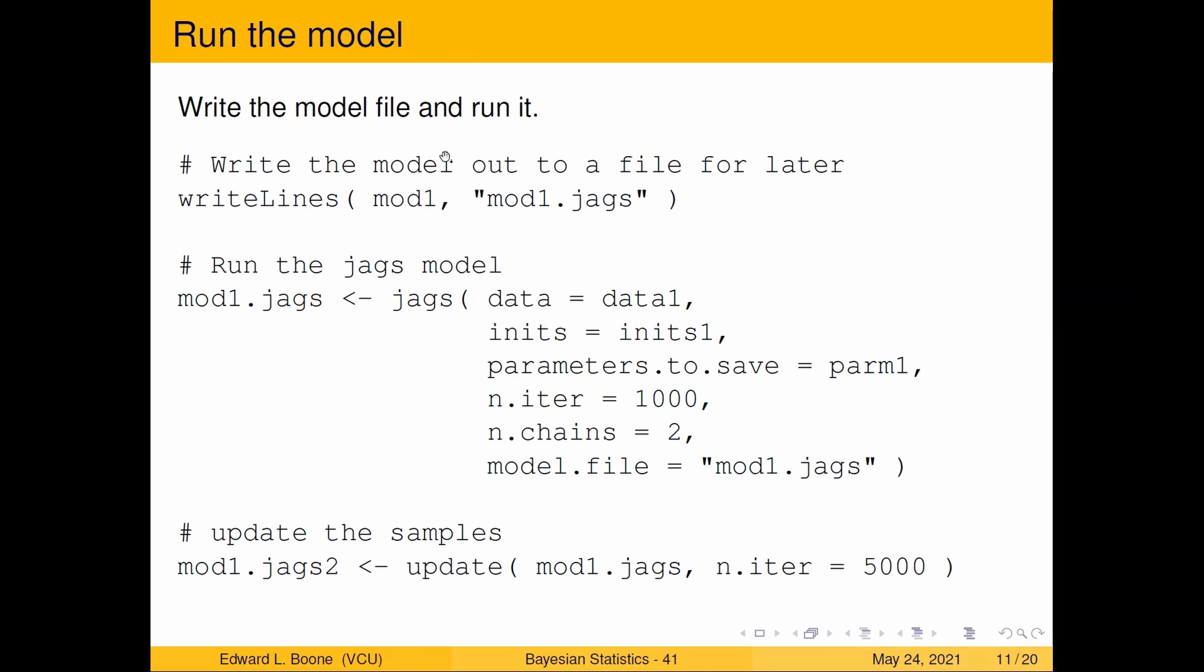We're going to write out the data or our model that we had, we called it mod one. This is going to get pushed out. We're going to run the model. Here's our data is data one, our initial is inits one, parameters our parm one which we specified before. Here we're doing a thousand iterations of two chains and our model file happens to be this one mod one jags. They have to match up.